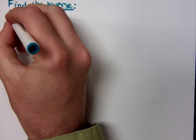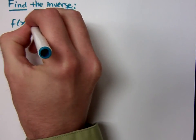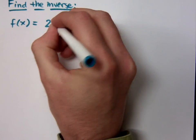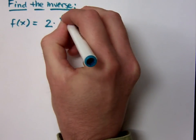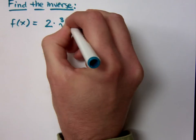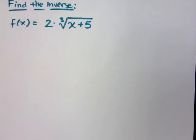So let's look at finding the inverse for this guy. f of x is equal to 2 times the cube root of x plus 5. A little bit more complicated, but I think we can still use a little shortcut here.